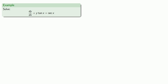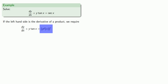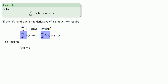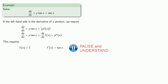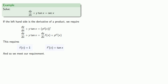What about dy/dx + y·tan(x) = sec(x)? If the left-hand side is the derivative of a product, we require dy/dx + y·tan(x) to equal the derivative of y·f(x). Expanding the right-hand side using the product rule and comparing the two sides, f(x) must be 1 and f′(x) must be tan(x). But if f(x) equals 1, then f′(x) equals 0, not tan(x) — so we don't meet our requirement. Now what?